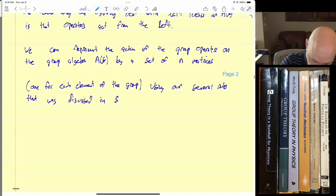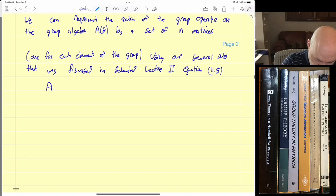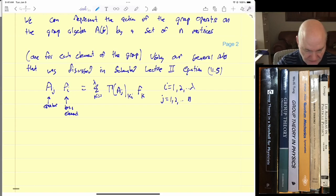So we can represent the actions of the group operators on the group algebra by a set of N matrices, one for each element of the group, using our general rule that was discussed early on in Janestad lecture, equation 2.5. And if you remember, I'll copy down that equation. A_J, which is an operator, acting on F_I, which is a basis element, equal to the sum of K equal to 1 to Lambda, Gamma(A_J)_KI F_K, I equal 1 to lambda, lambda basis elements, lambda dimensional representation, j equal 1, 2, the order of the group.